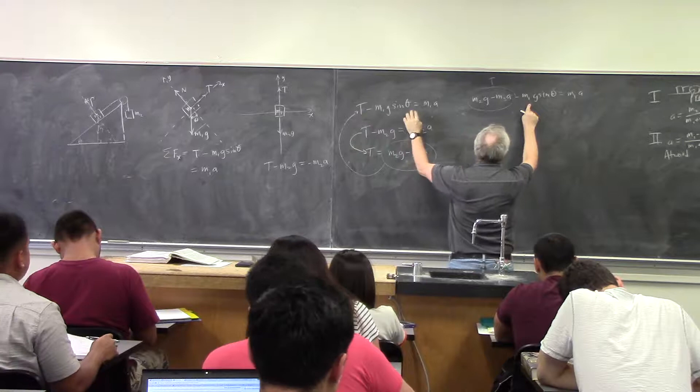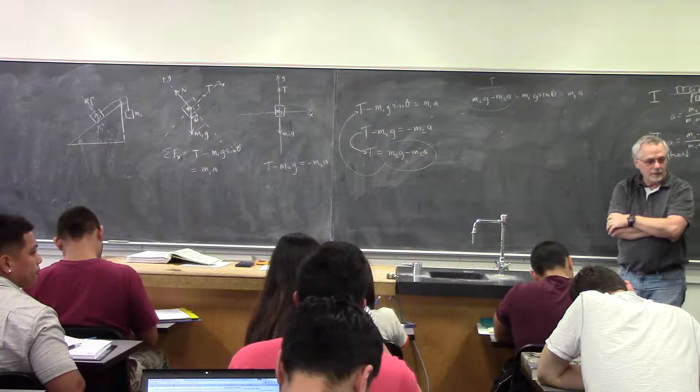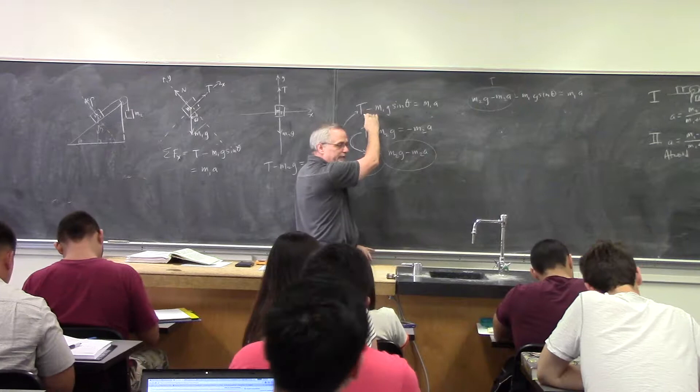So I took the second equation, found the expression for T, and substituted it in for T. Now the only unknown left is a, and I just do algebra and solve for it.